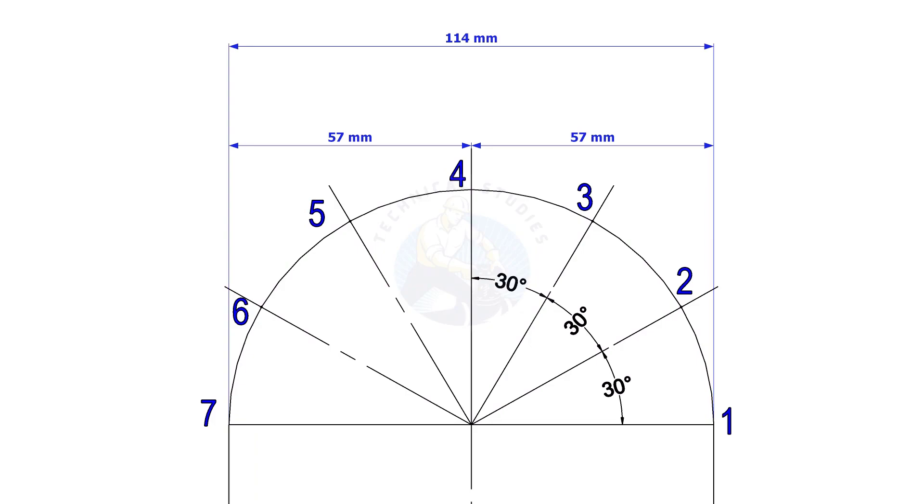Divide this half circle into 6 equal segments. If the pipes are above 6 inches, you may need to increase the segments for better accuracy.